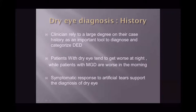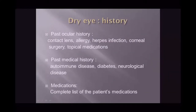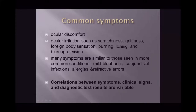To diagnose dry eye, clinicians rely on case history as an important tool. Patients with dry eye tend to worsen at night, while those with meibomian gland dysfunction are worse in the morning. Symptomatic response to artificial tears can support the diagnosis. Past ocular and medical history and medications should be reviewed as risk factors. Note that many symptoms overlap with common conditions like mild blepharitis, conjunctival infection, allergy, and refractive errors, which must be excluded.